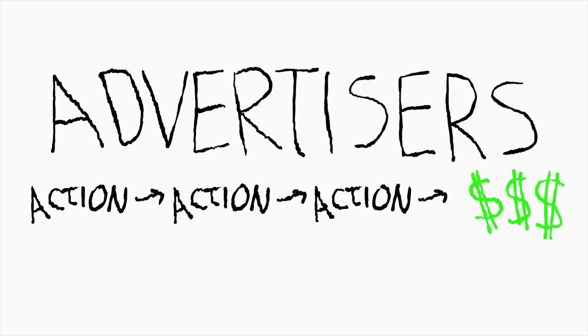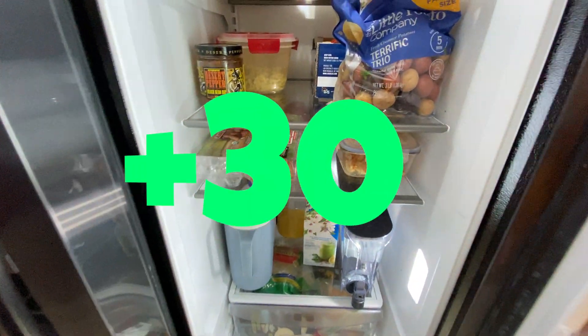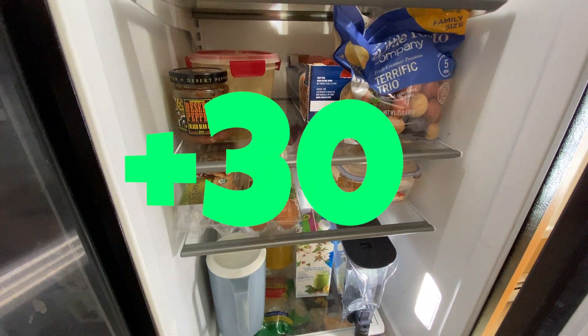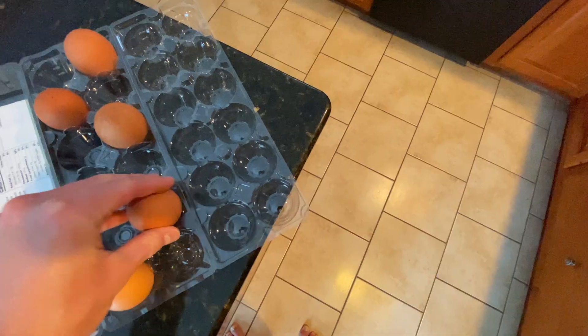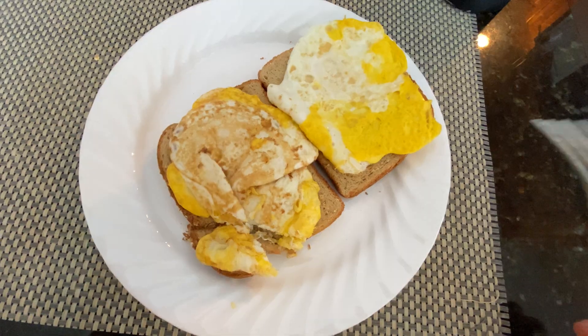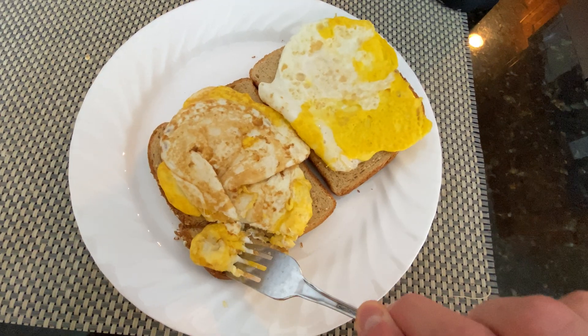Advertisers comprise of an action sequence and a reward. For example, a fridge may advertise a 30-point boost to the NPC's hunger if they complete the action sequence of getting an egg, cooking an egg, and eating an egg.